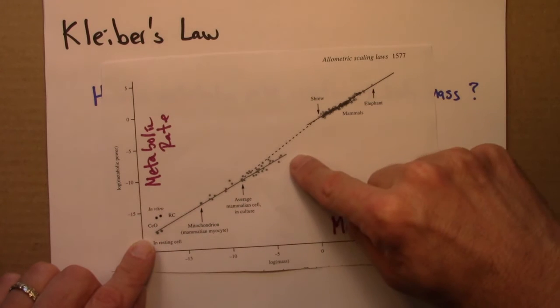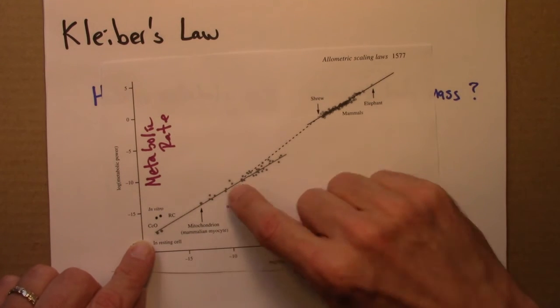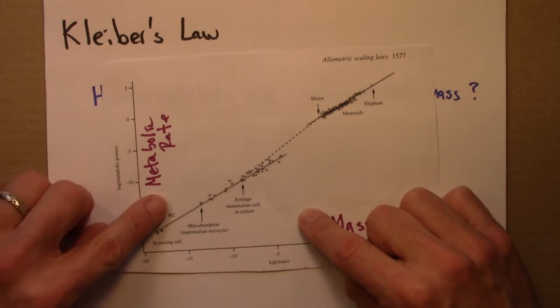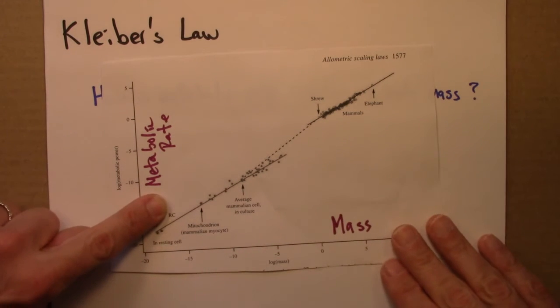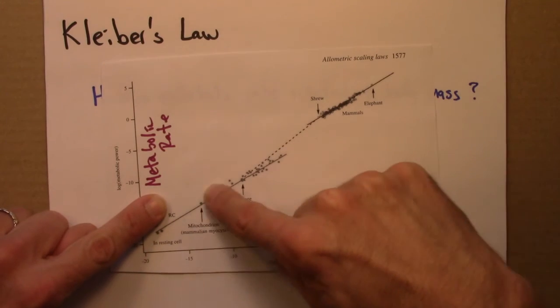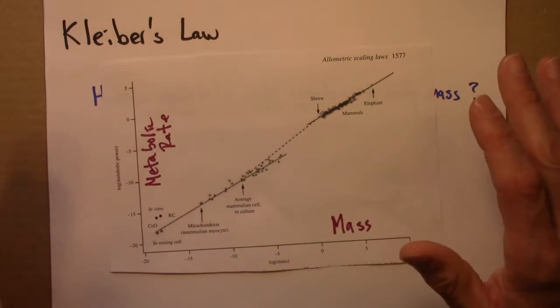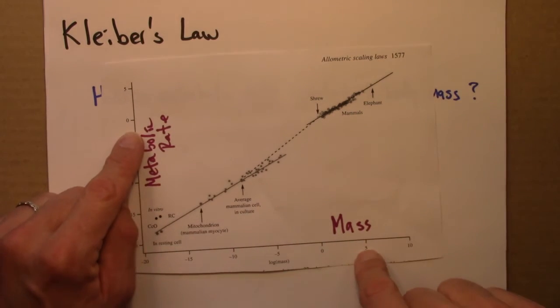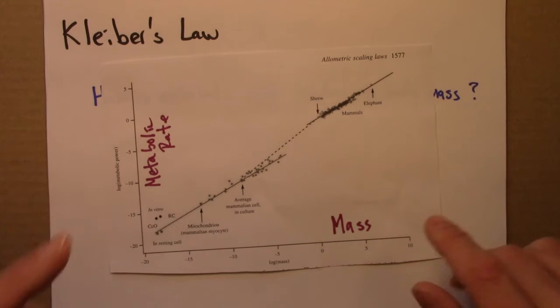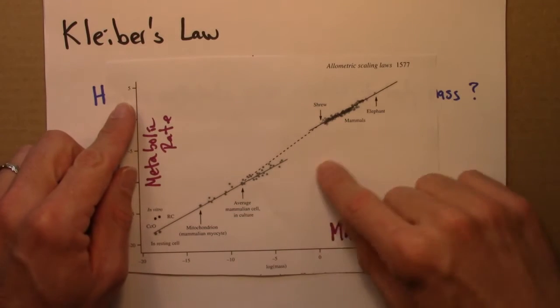Here, these are cells. So this is an average mammalian cell, mitochondria, these are resting cells. And let's ignore those two points. But the main result is that there's a linear relationship here, and a linear relationship here. And we've learned that a linear relationship on a log-log plot is an indication of some sort of power law or scale-free behavior. So we expect that there's some scaling relationship.